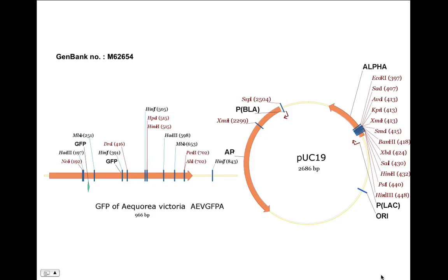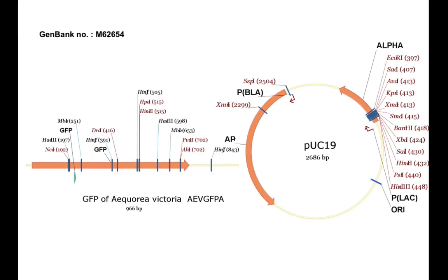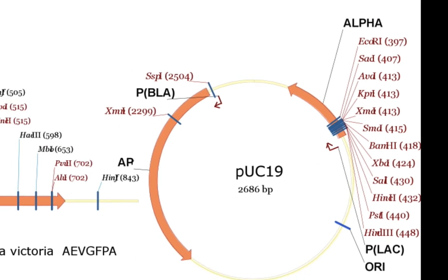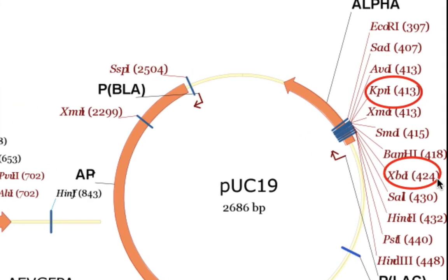These are the graphic maps of the sequences — the GFP gene is shown by the yellow line and the orange arrow. This is the GFP sequence from Aequorea victoria. This is the common cloning vector PUC19, and all these restriction enzymes cut singly within PUC19 at the multiple cloning site, which is concentrated here. Let's imagine we decide to clone GFP between KPN1 and XPA1 restriction enzyme sites within the MCS of PUC19.